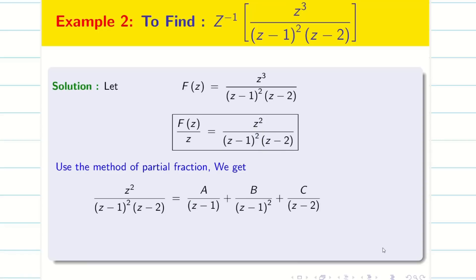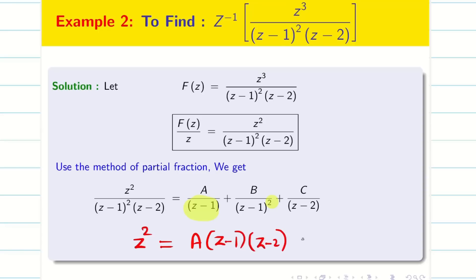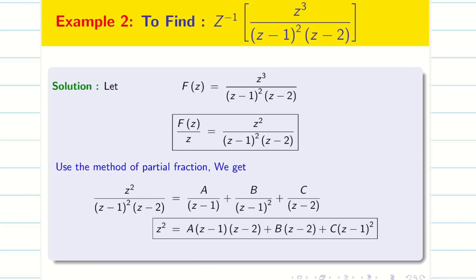When you take the LCM, don't write the denominator — both sides cancel automatically. Just write the numerator. On the left hand side I get Z square. For A, multiply Z minus 1 into Z minus 2; for B, multiply Z minus 2; and for C, multiply Z minus 1 whole square. This is my simplified version.